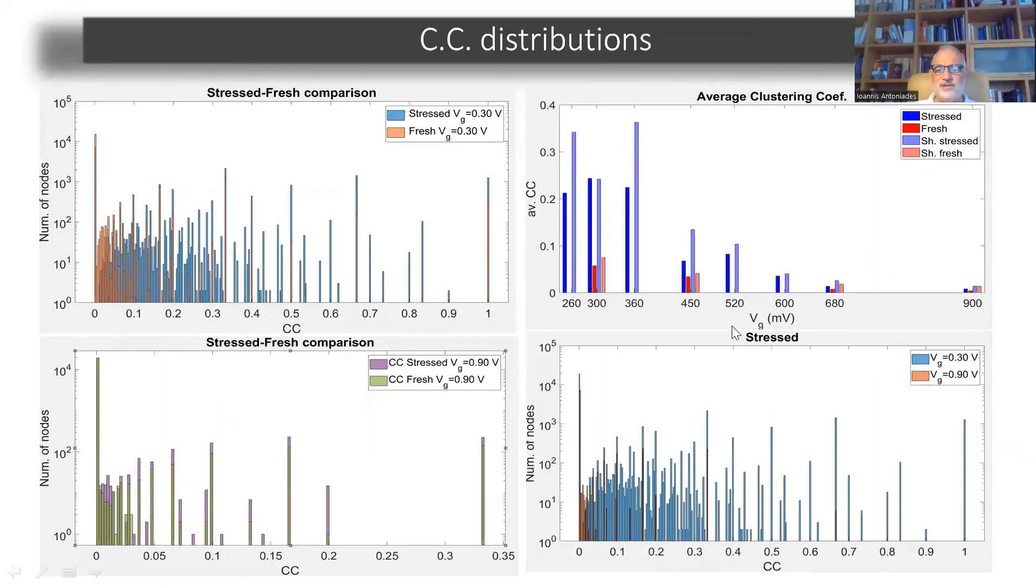And the most interesting result came from the clustering coefficient distributions. On the upper left plot, you can see that the stressed and fresh transistors for the same gate voltage have completely different clustering coefficient distributions. The fresh transistor has less clustering than the stressed transistor.